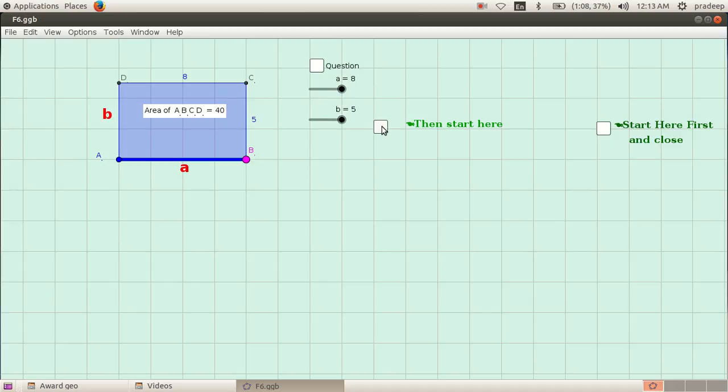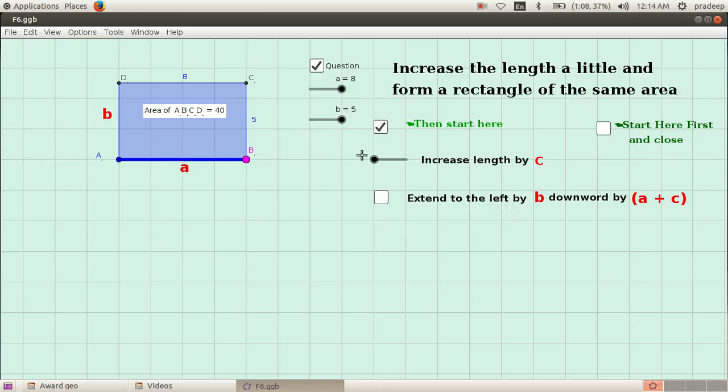The problem is: increase the length of this rectangle a little bit and form a rectangle of the same area. Let's increase this length by 5 centimeters. Then the second step is to extend this line to the left which is equal to the breadth of this rectangle.